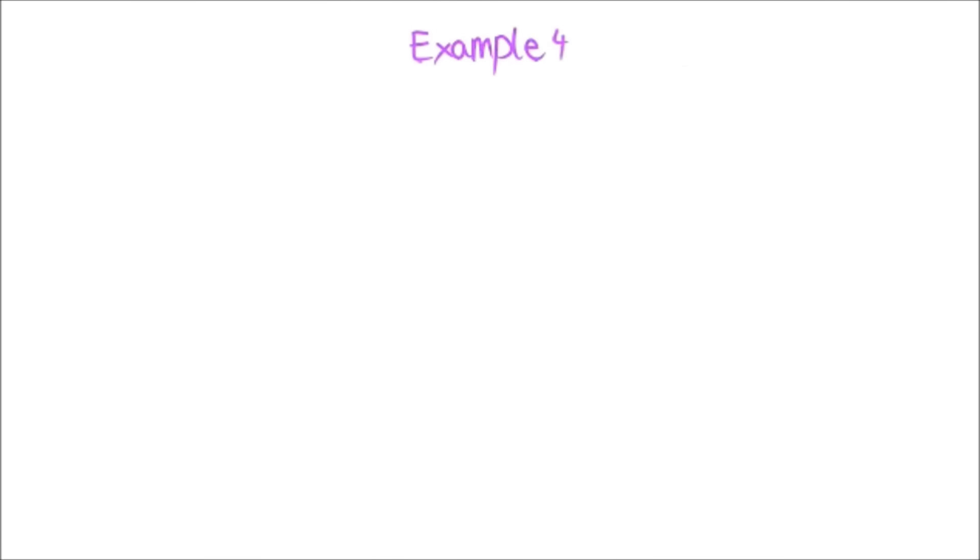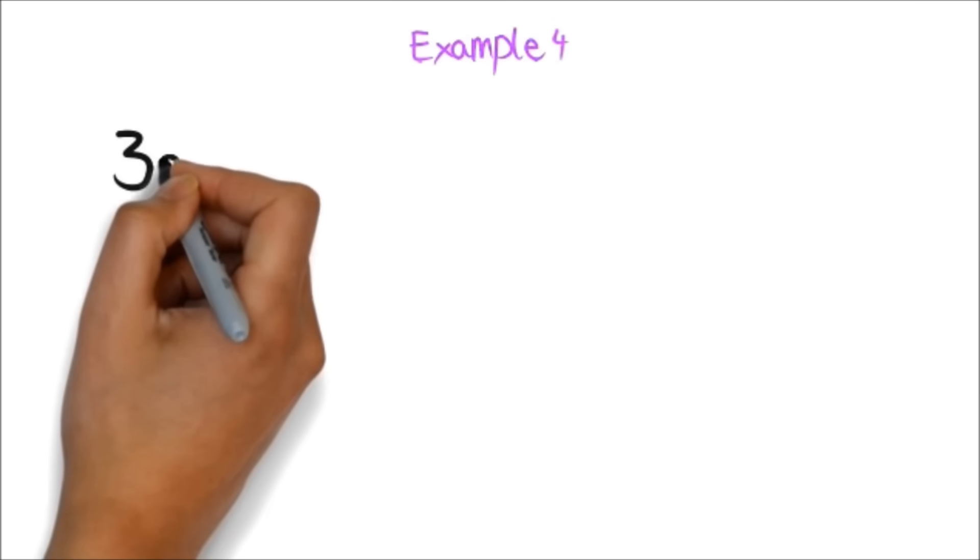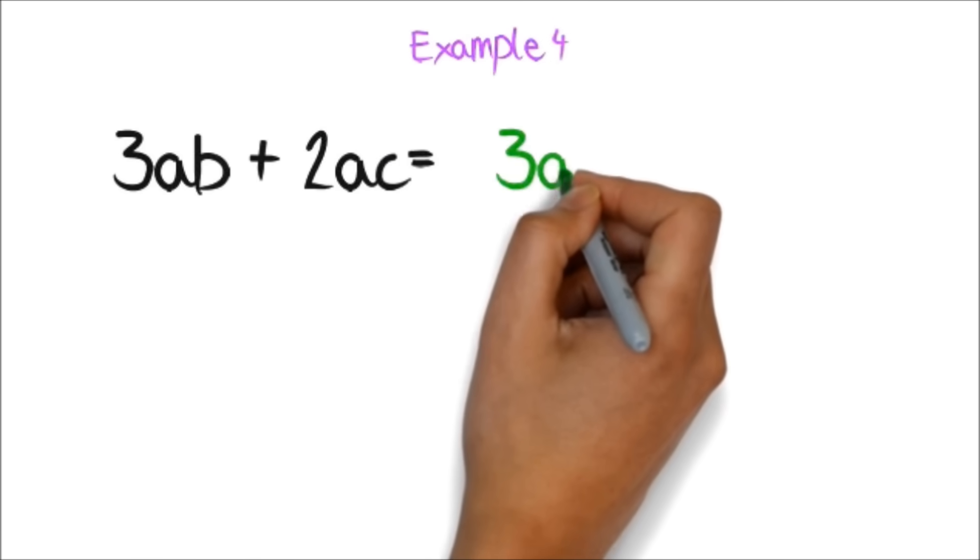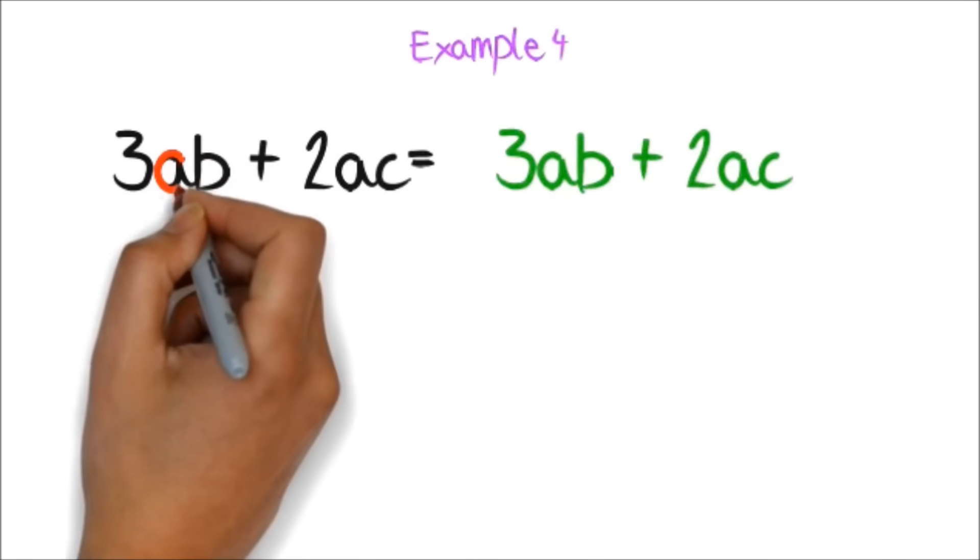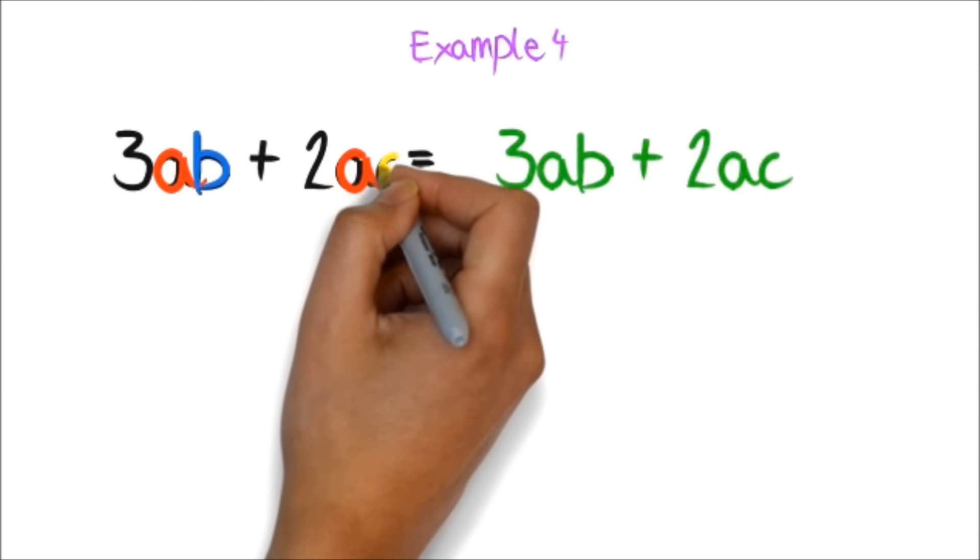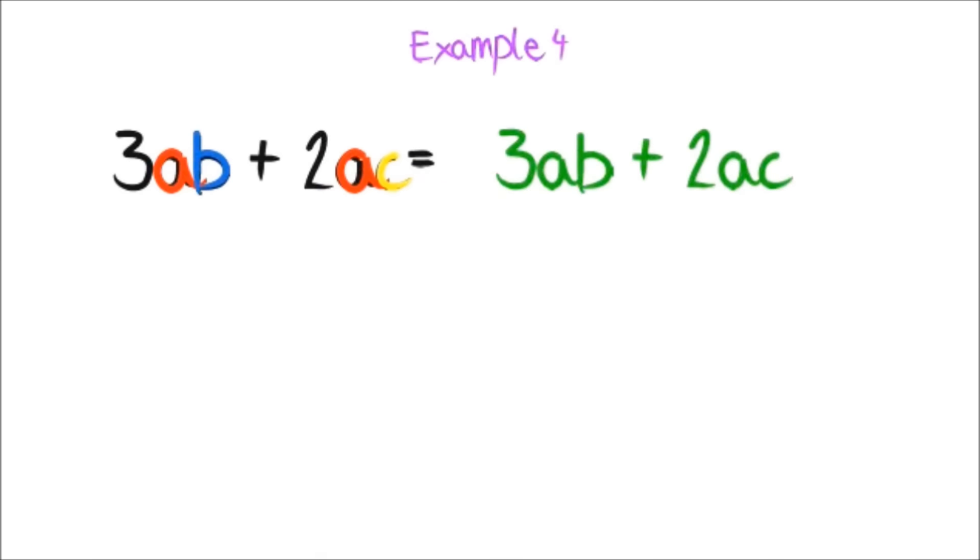Example 4. You cannot add 3ab plus 2ac. Although they both have a, one is ab, and the other is ac. They must be exactly the same before you can add them.